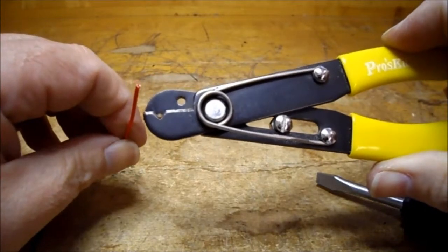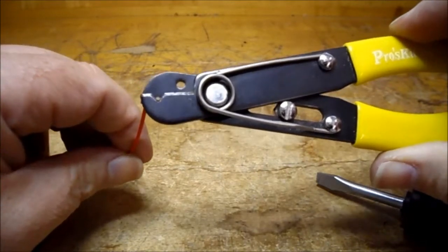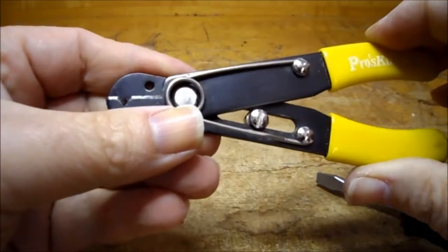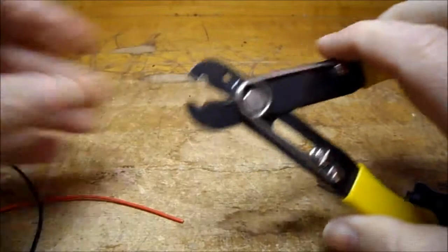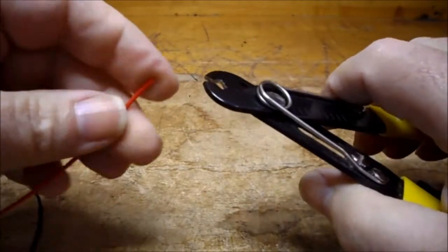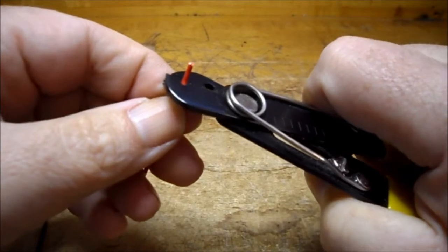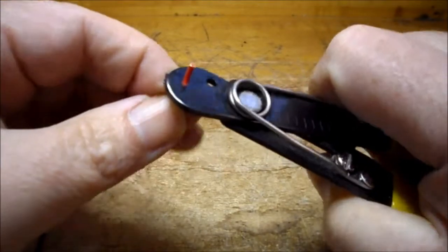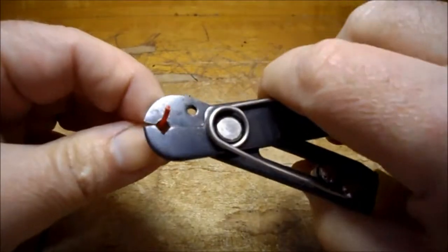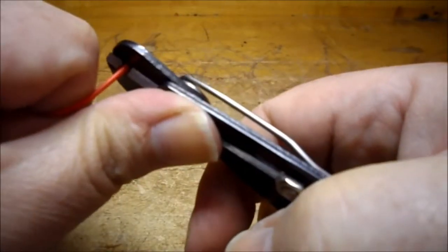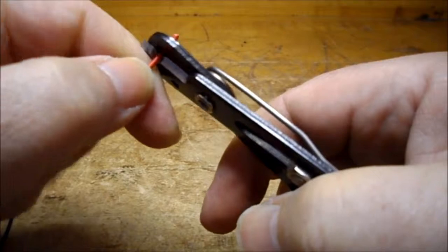So you've got to close it just enough so it touches the wire without nicking it. The best way to do this is what I do - I just slowly bring it together around the wire. Don't try and close it all the way up, just close it up a little bit until you can pull some of the insulation off the wire.